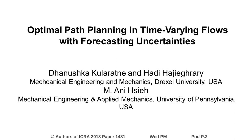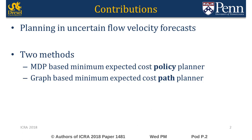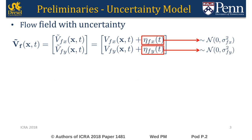My name is Danushka. The title of our paper is Optimal Path Planning in Time Varying Flows with Forecasting Uncertainties. We present two path planning methods that explicitly consider uncertainties in velocity forecasts. The first method, based on an MDP framework, computes a minimum expected cost policy. The second graph-based method computes a minimum expected cost path.